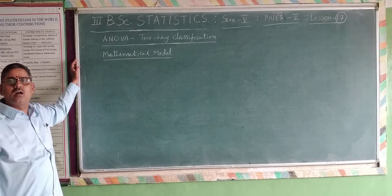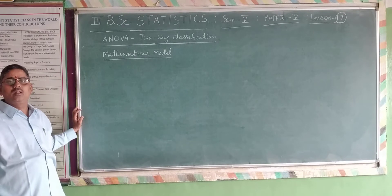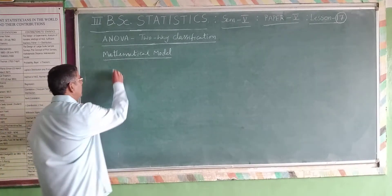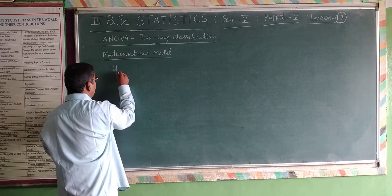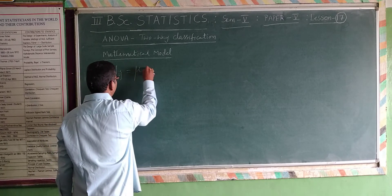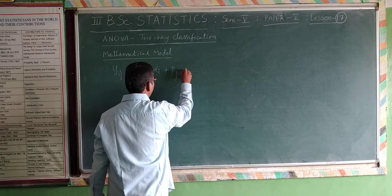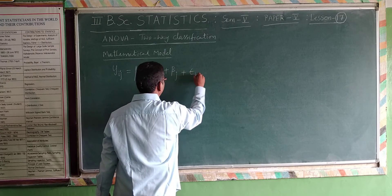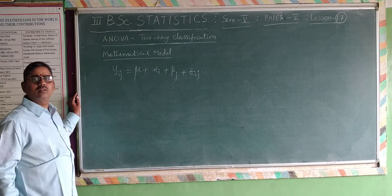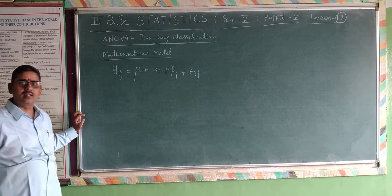What is the mathematical model? The linear mathematical model in two-way classification is expressed as: yij is equal to mu plus alpha i plus beta j plus epsilon ij. This is the mathematical model considered in two-way classified data.